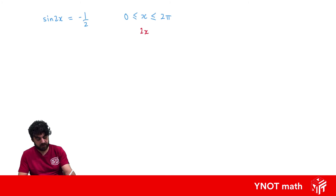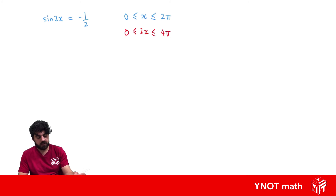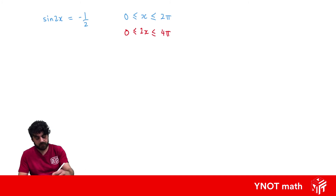To change the domain from x to 2x, we multiply everything by 2. So 2 times 0 is 0, and 2 times 2π is 4π, which basically means we need to look at two full revolutions of the unit circle. Let's draw our unit circle.